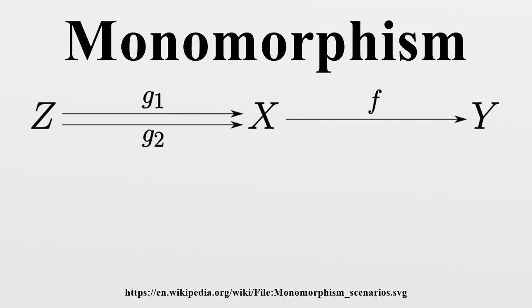Related concepts: There are also useful concepts of regular monomorphism, strong monomorphism, and extremal monomorphism. A regular monomorphism equalizes some parallel pair of morphisms. An extremal monomorphism is a monomorphism that cannot be non-trivially factored through an epimorphism.